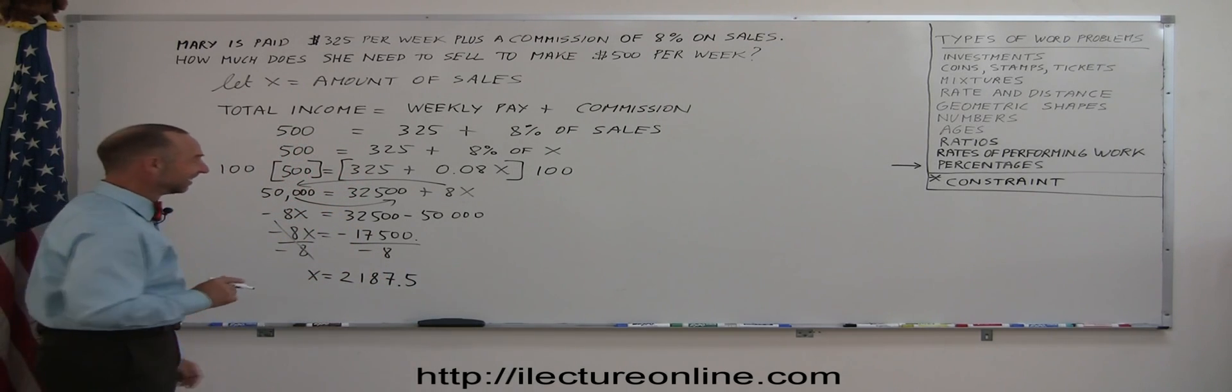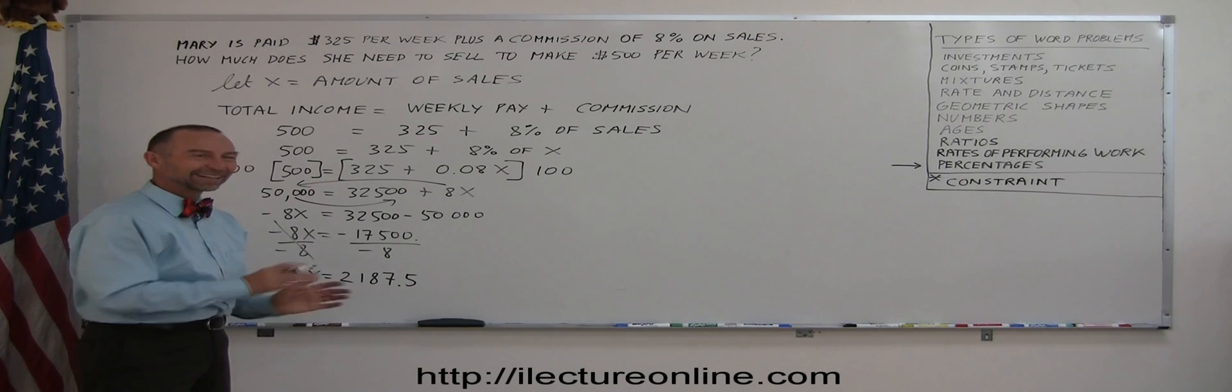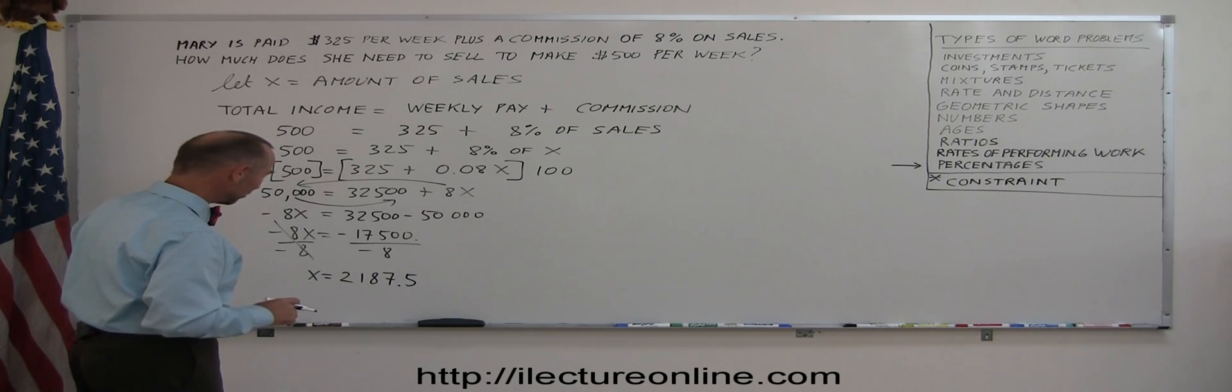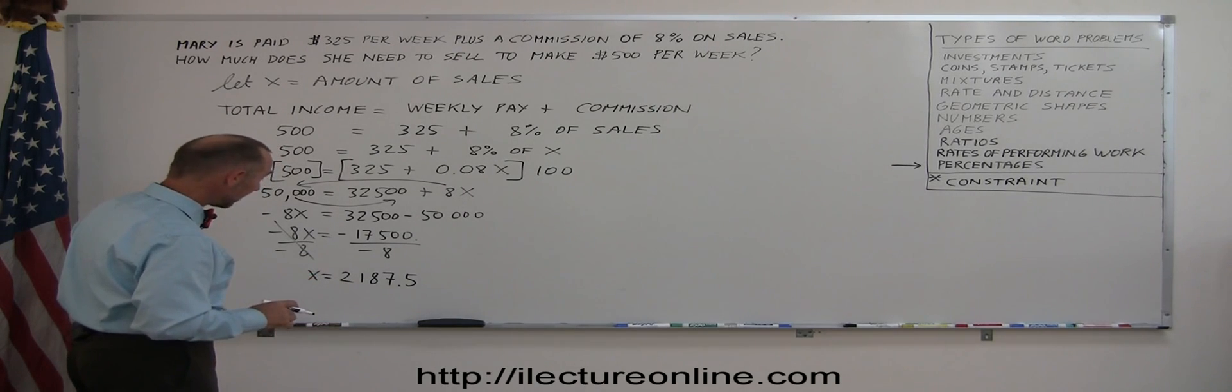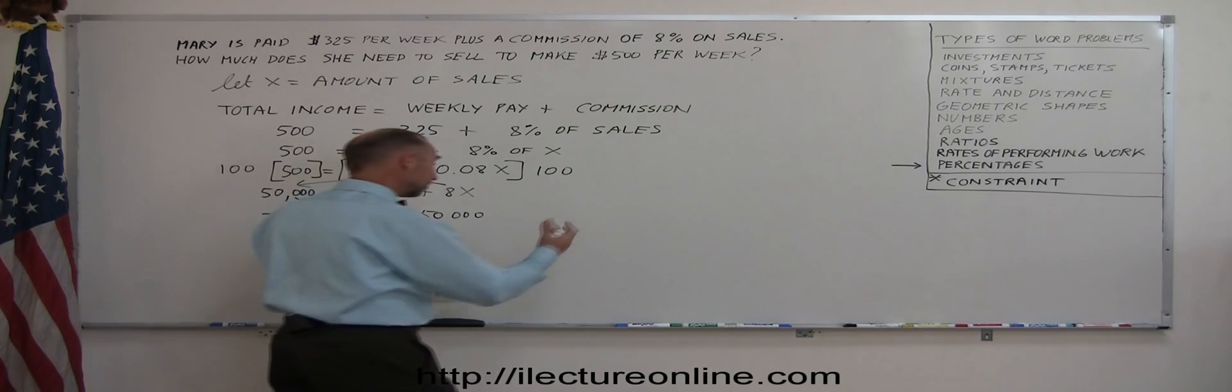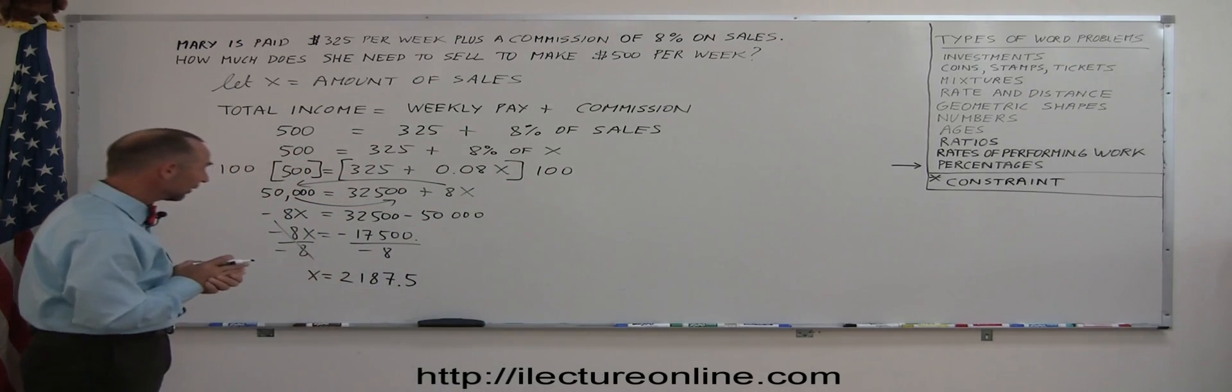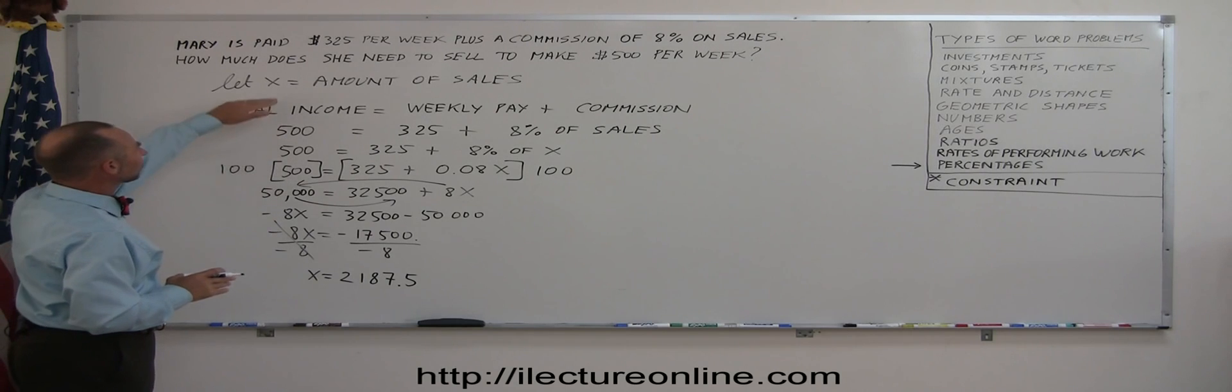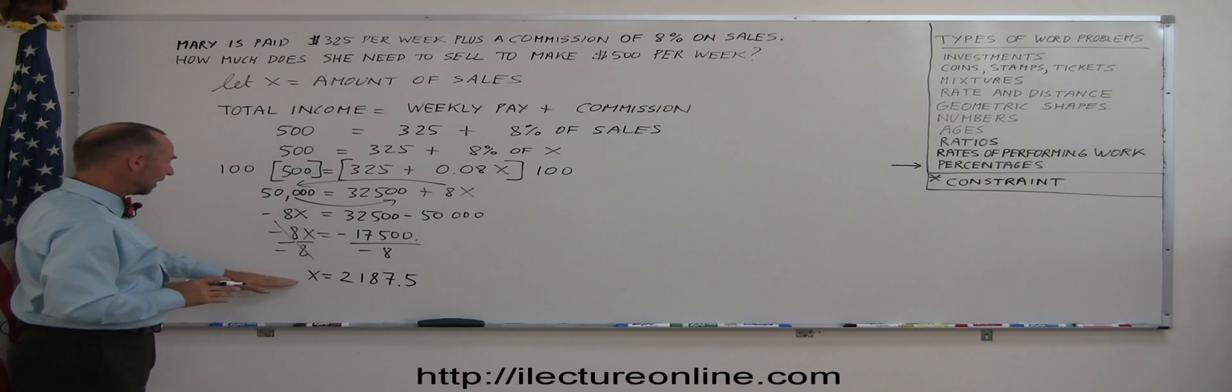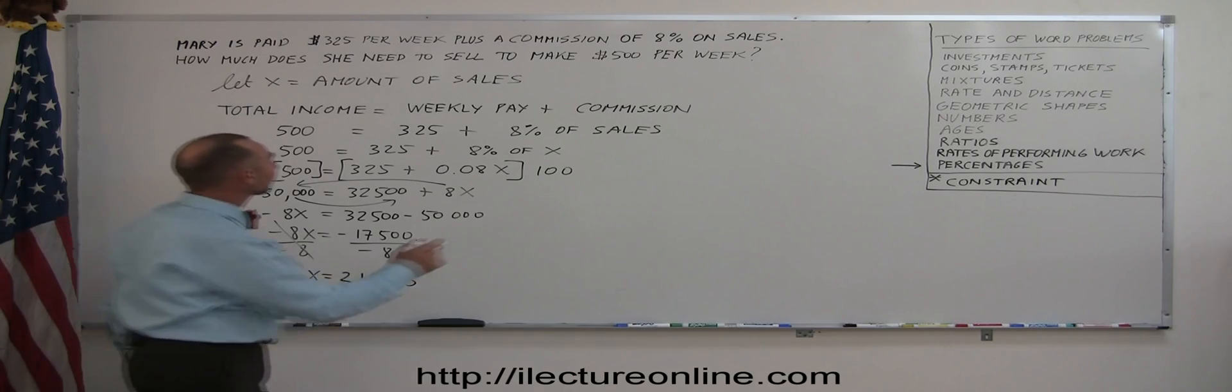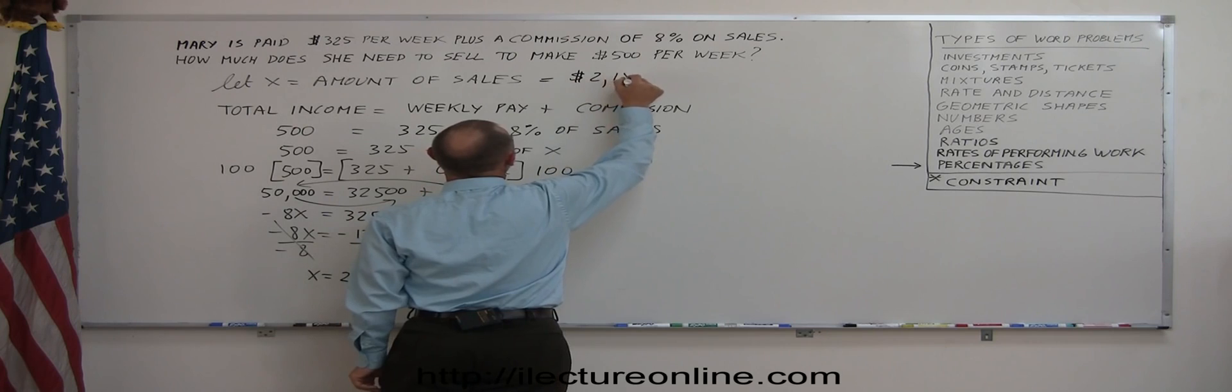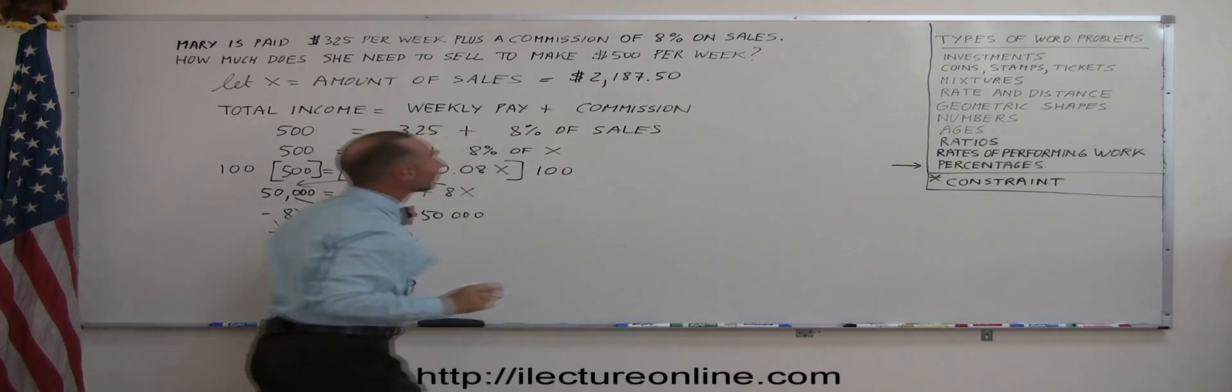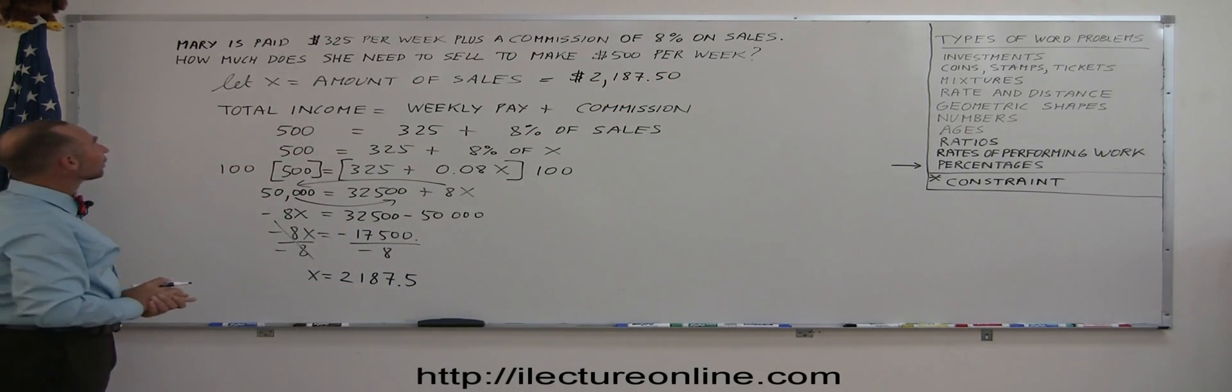If you didn't follow that, because most of us nowadays don't like to do that kind of thing anymore, another way you could do that is just simply grab a calculator and solve for that number. Now, of course, X represents the amount of sales. And that would be in dollars. So this is equal to $2,187.50. And that would be the amount Mary would have to sell each week in order for her to earn $500.